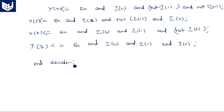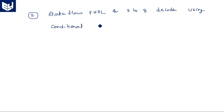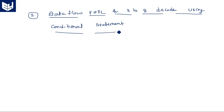Now instead of this, we can also write using conditional statements — the second style of data flow VHDL for the 3-to-8 decoder using conditional statements. The conditional statement used in data flow is `with...select`. We can use `with...select` to write the data flow model.